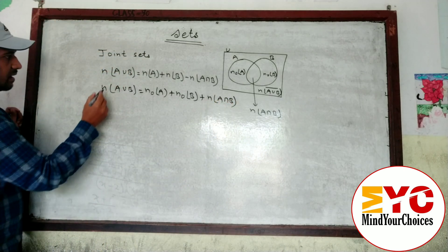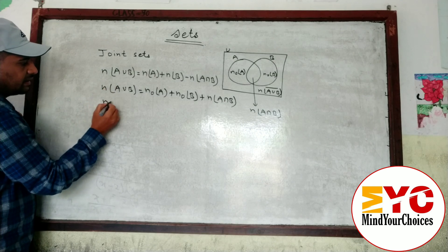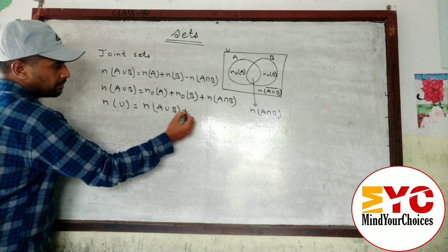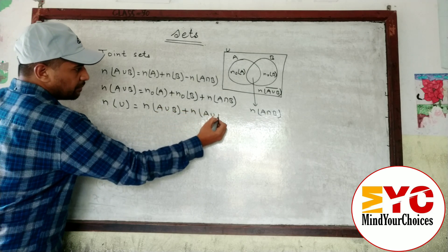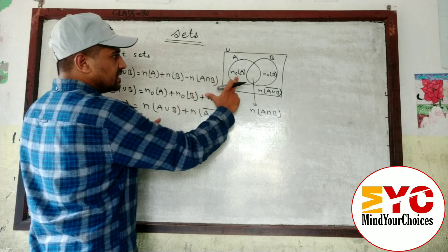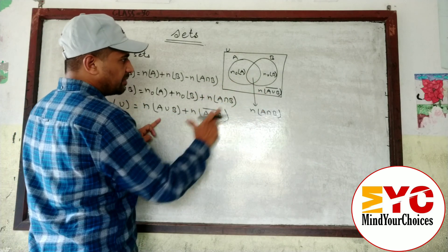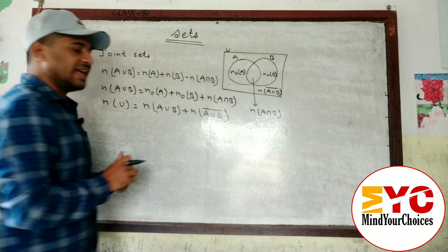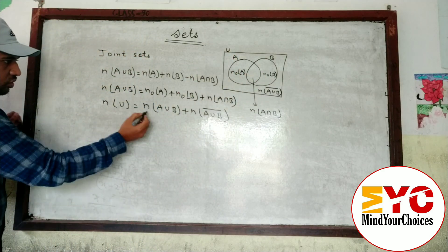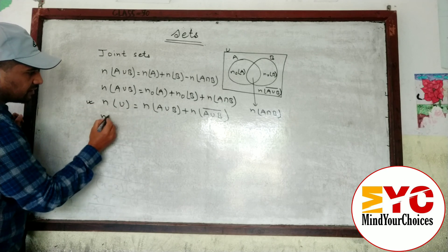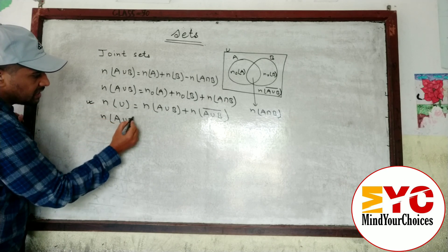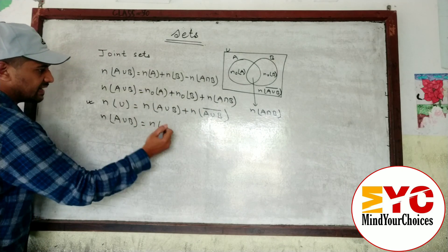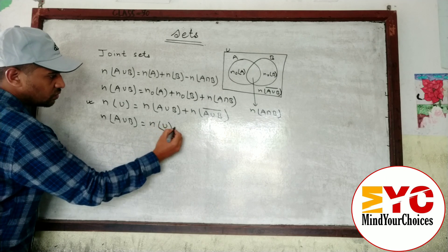Now the n(U) formula. n(U) equals n(A∪B) plus n(A∪B)'. A∪B means this part plus this part plus this part, and the complement means the outer part. When you add all these parts together you get the total, which is n(U). From this formula you can also find n(A∪B).